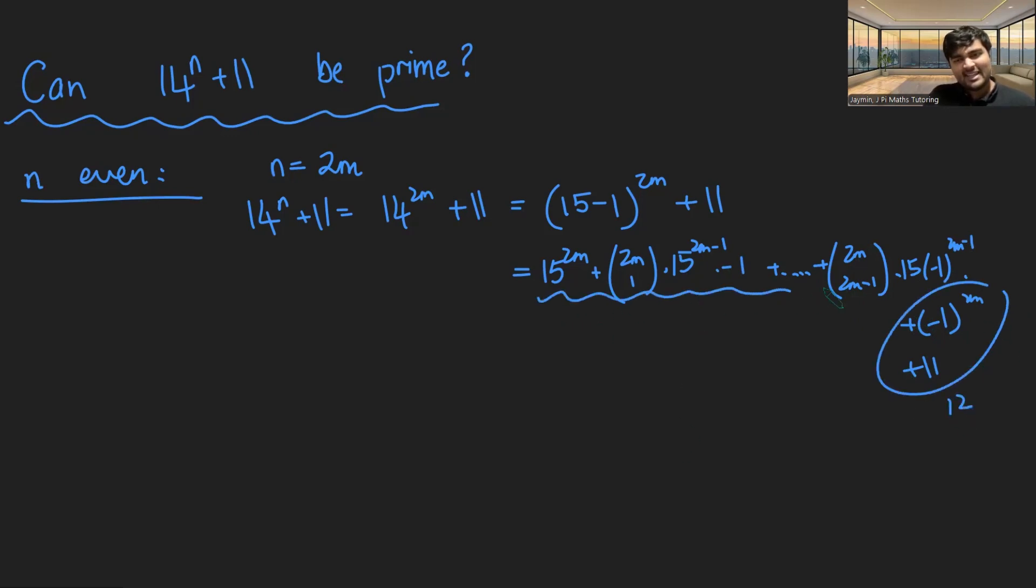And now all of these terms here, I don't know what they are, but they've all got a 15 in them. And since they've all got a 15 in them, they're all going to be multiples of 3. 12 is also a multiple of 3. And so this guy here is guaranteed to be a multiple of 3.